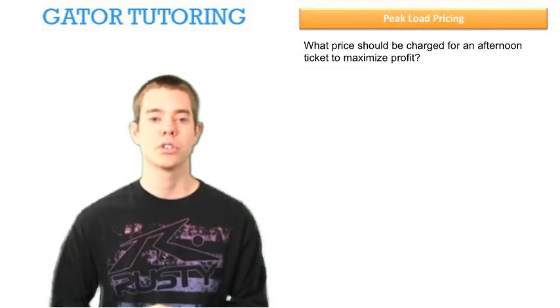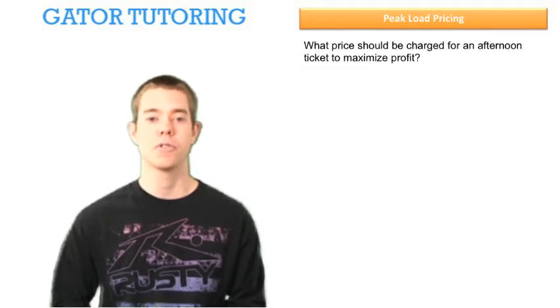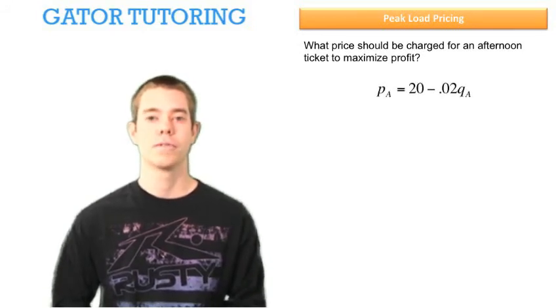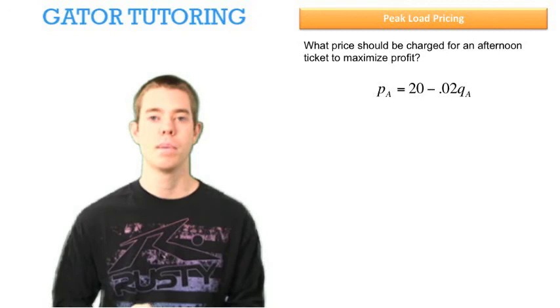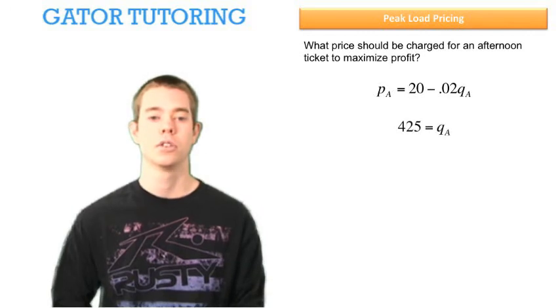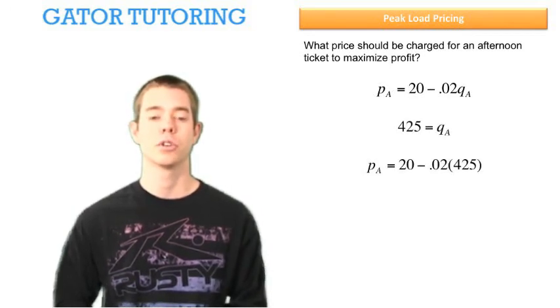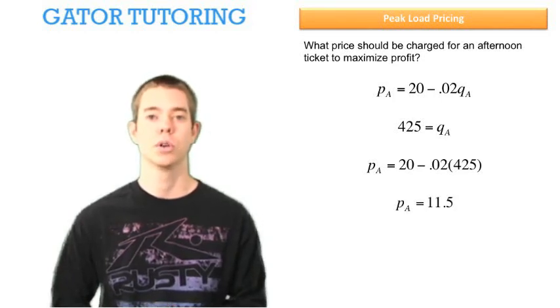The last question says, what price should be charged for an afternoon ticket to maximize profit? Well, we just solved for quantity in the afternoon. Remember that price in the afternoon is equal to 20 minus 0.02 QA. That was given to us in the beginning. So since quantity in the afternoon is 425 units, we just plug that in for QA, and we can solve for the price in the afternoon is equal to $11.50.